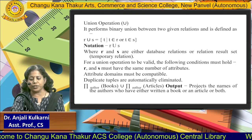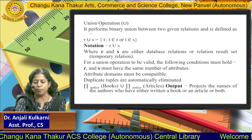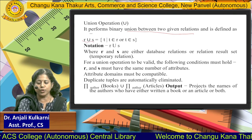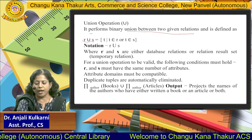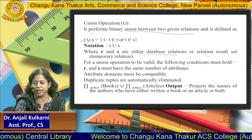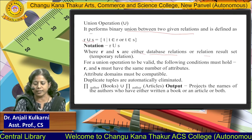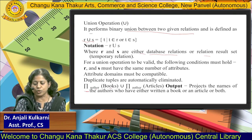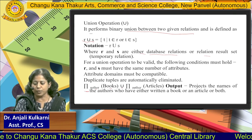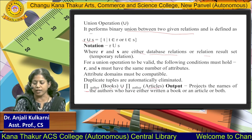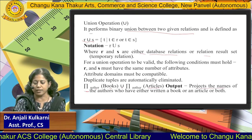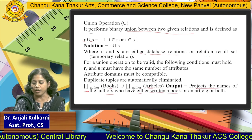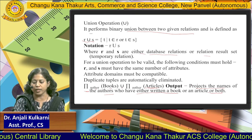Next is the union operation. It performs a binary union between two given relations and is defined as R union S, where R and S are either database relations or relation result sets. For example, taking author from Books union author from Articles projects the names of authors who have written a book, an article, or both.